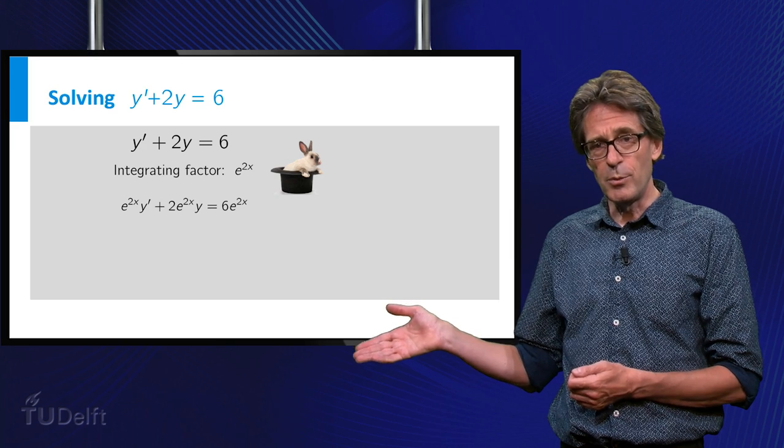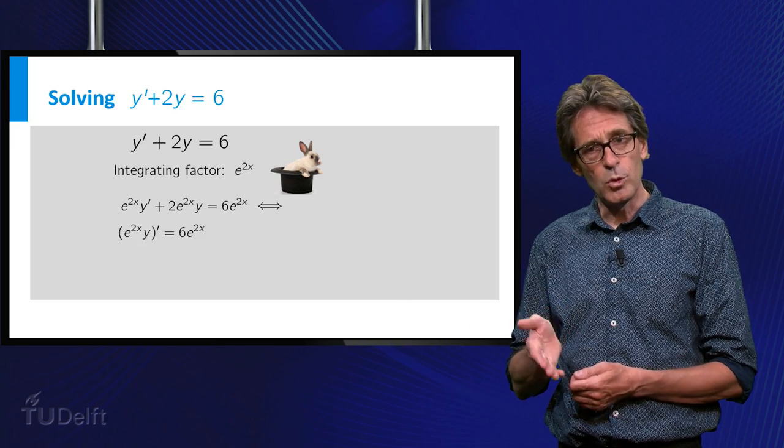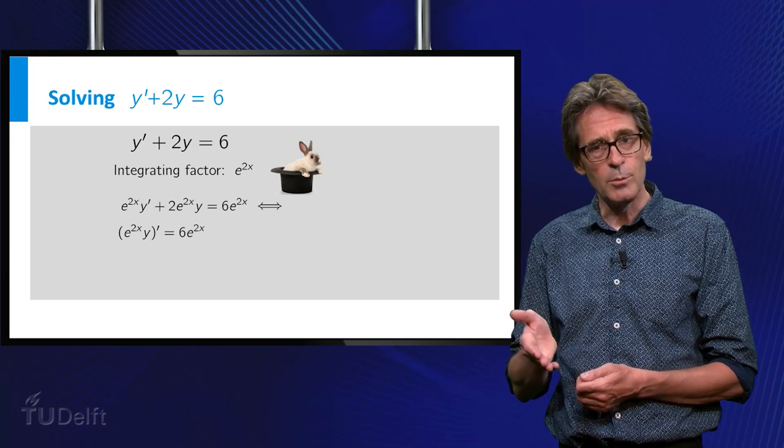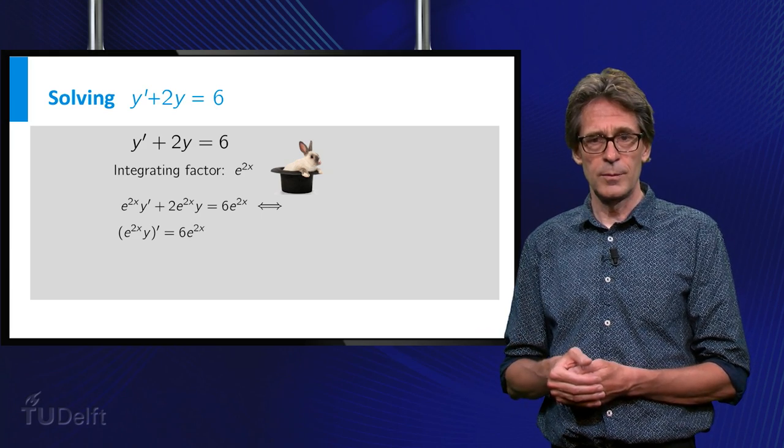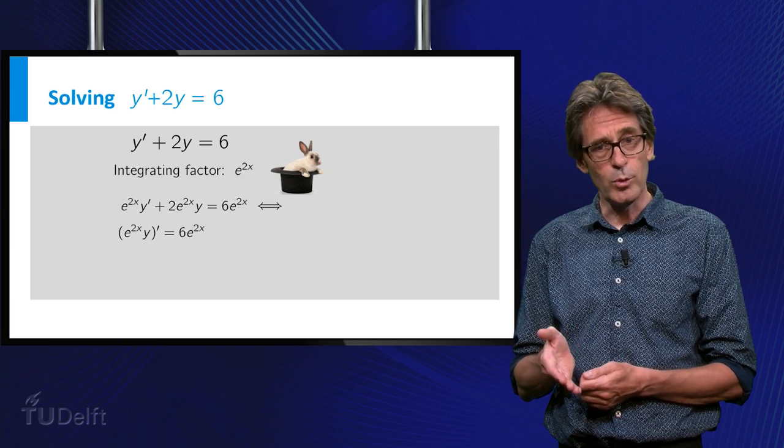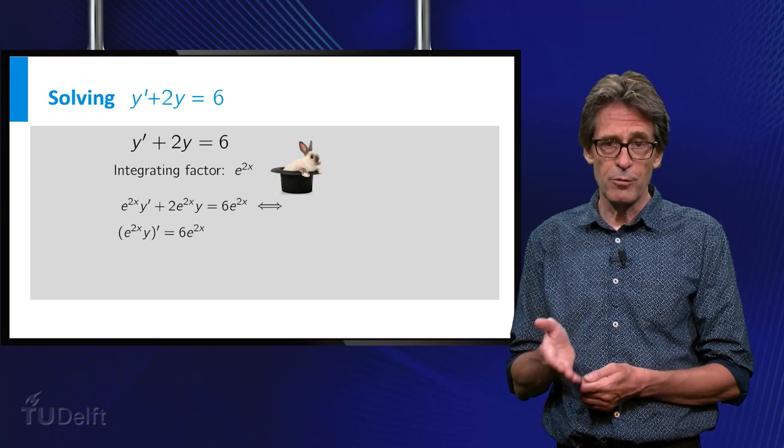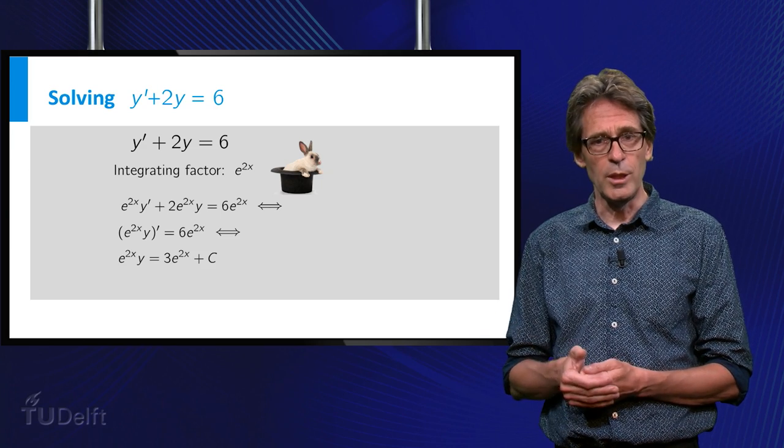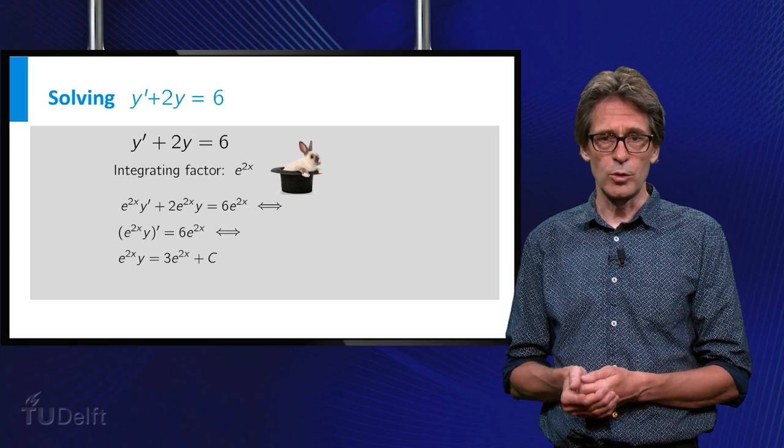And it can be rewritten as the derivative of e to the 2x times y is equal to 6 times e to the 2x. We conclude that e to the 2x times y is a primitive function of 6 e to the 2x. So it must be equal to 3 e to the 2x plus a constant.